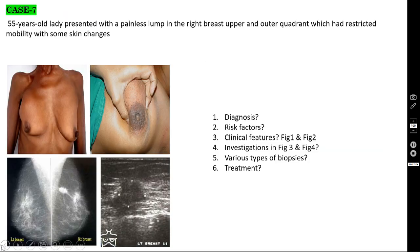In the mammogram, you see dense opacity, small microcalcifications, and hair-like projections — this is called spiculated appearance. This is suspicious. In the ultrasound image, the height is more than the width, which is also suspicious. All suspicious lesions must be confirmed by true-cut biopsy.